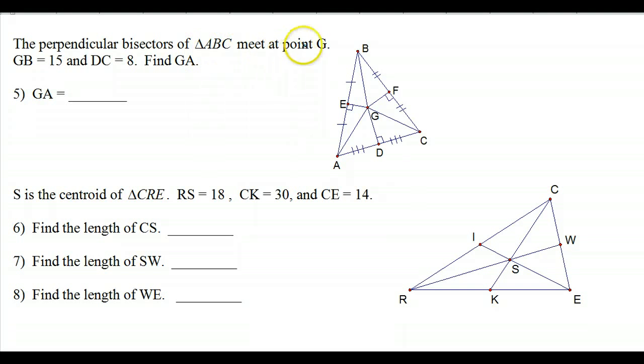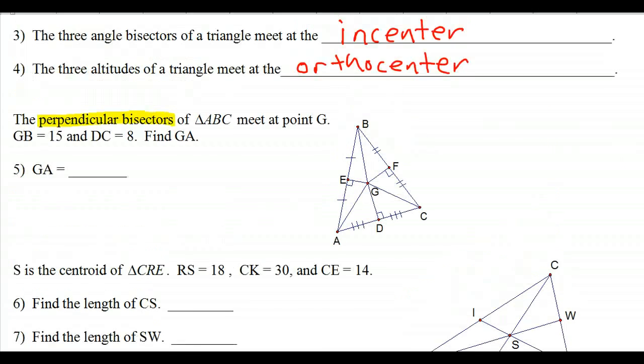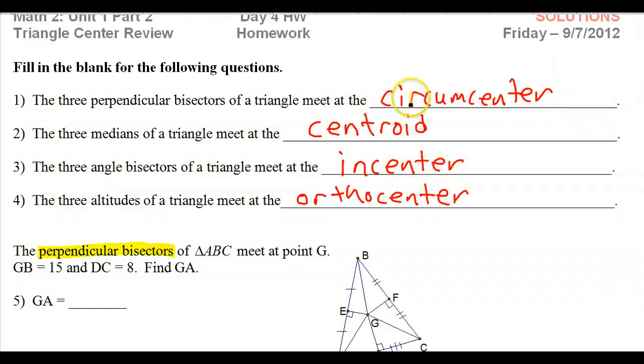Perpendicular bisectors of triangle ABC meet at point G. When you see perpendicular bisectors, you have to translate that into which triangle center we're talking about. If you've memorized the definitions, you will know this connection. Perpendicular bisectors means we're talking about the circumcenter. Then you have to make another connection from circumcenter to the special property. What is the special property of a circumcenter? Hopefully you said equidistant from the vertices.